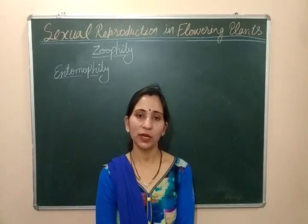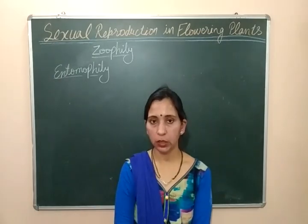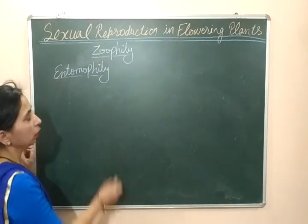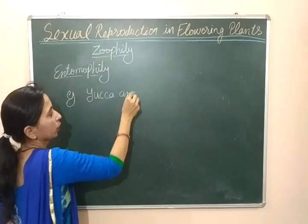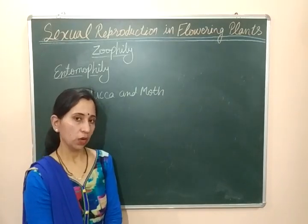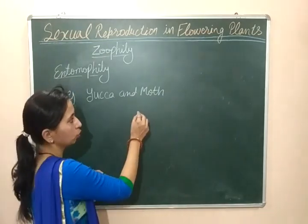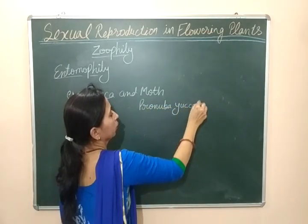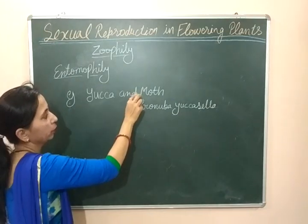Hello students, hope you are studying well. In the previous video we discussed some important characteristics of entomophily. Now we will discuss some examples of entomophily. The most important example of entomophily is the example of mutual association of yucca and the moth. The technical name used for this moth is Pronuba yuccasella.